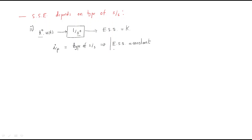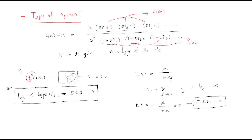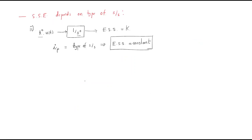In the previous case, whenever the input power is less than the type of the system, the steady-state error is automatically 0. But here, in this case, the steady-state error becomes constant.